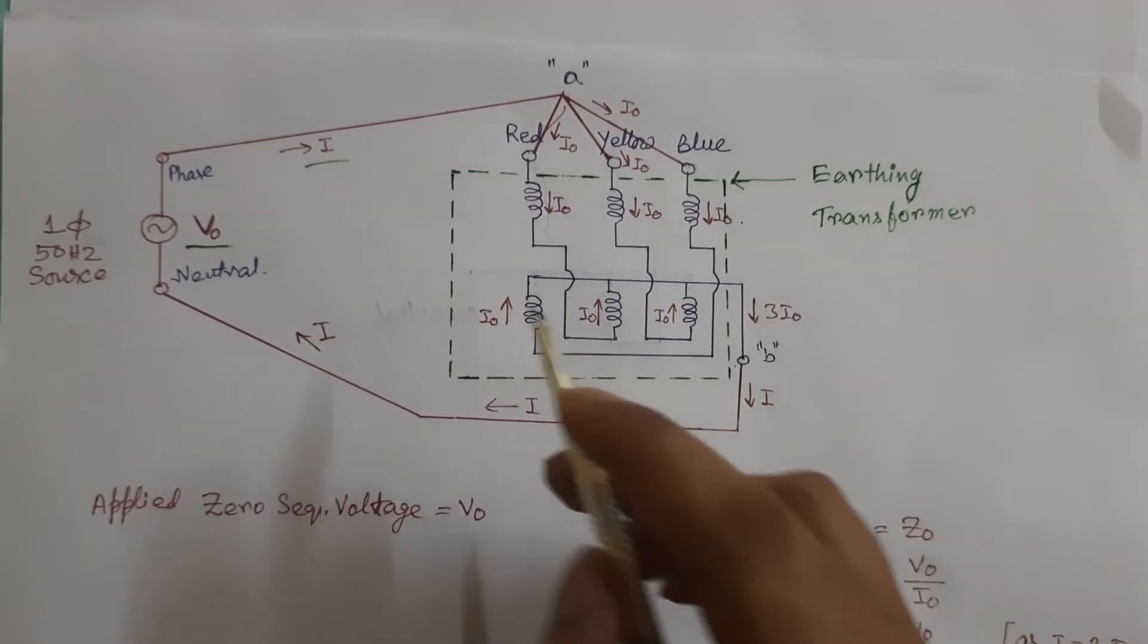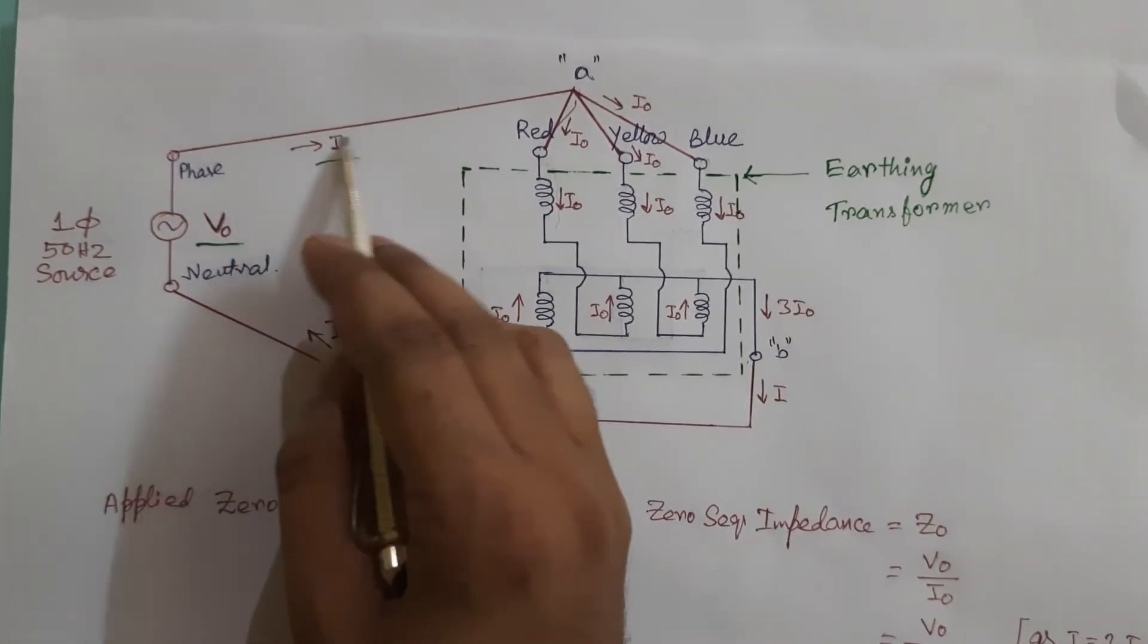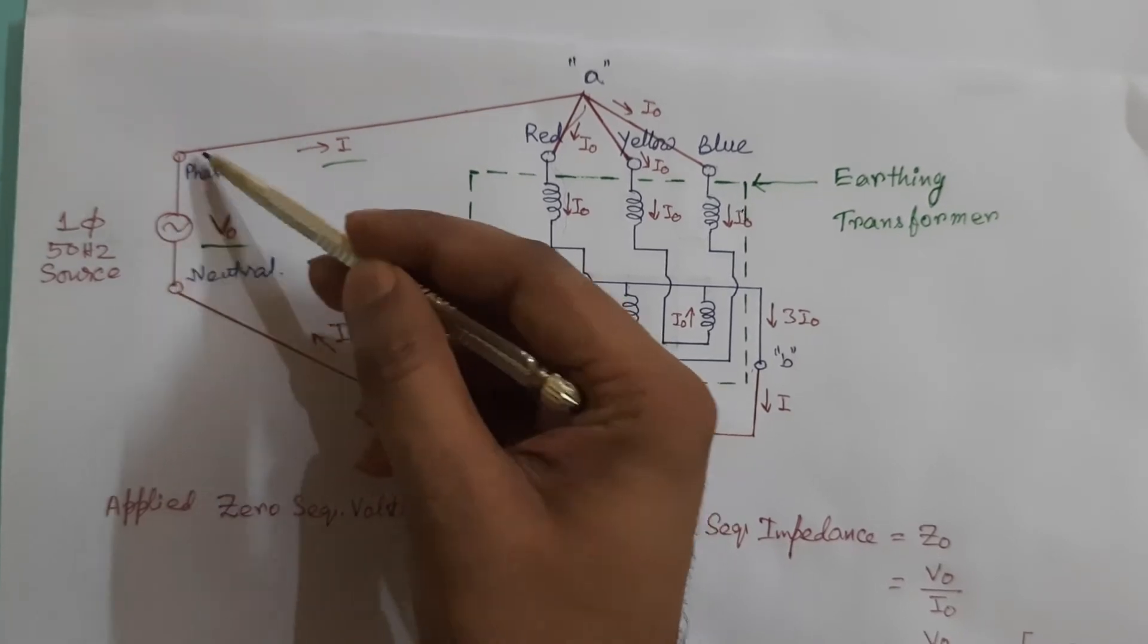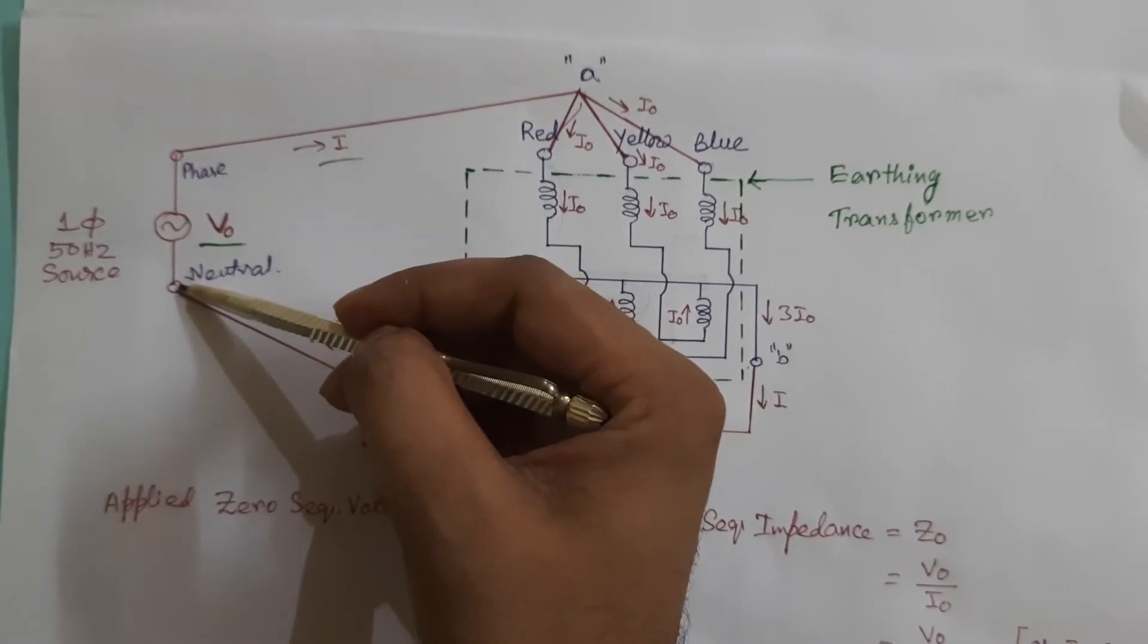We can measure this current by using a clampometer and we can measure this voltage V zero by using a multimeter.